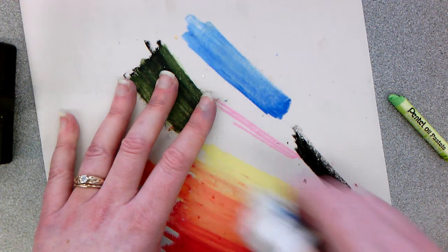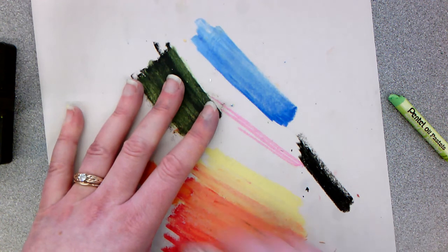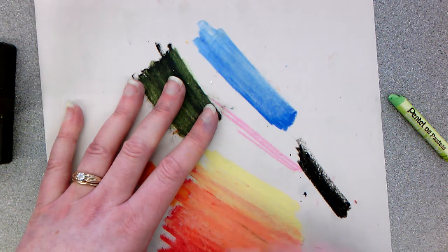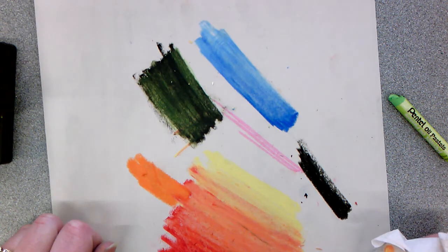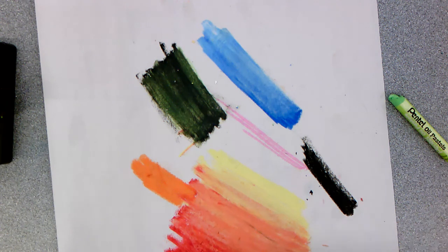If you're working on oil pastels at home, you can blend it with some oils like baby oil or vegetable oil. And it kind of makes it go really smooth.